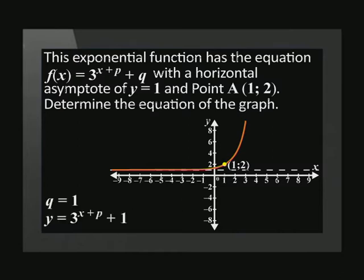y equals 1 is the horizontal asymptote, so we can substitute q with 1. We can use the coordinates of a to substitute into x and y in the equation. This leaves us with p as the only unknown value.